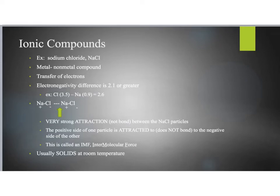First we're going to start by talking about ionic compounds. Ionic compounds are metals and non-metals, and they have a transfer of electrons. With this transfer of electrons, we get what we call full charges, because the metal is going to lose its valence electron to the non-metal, so the metal becomes positive, and the non-metal becomes negative.